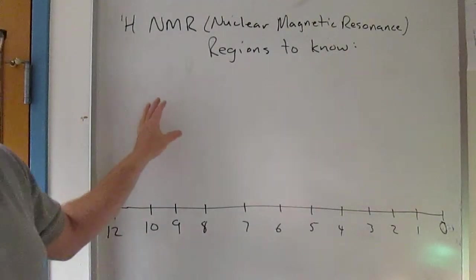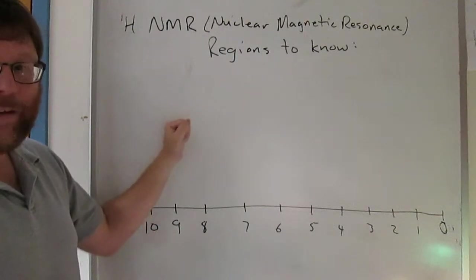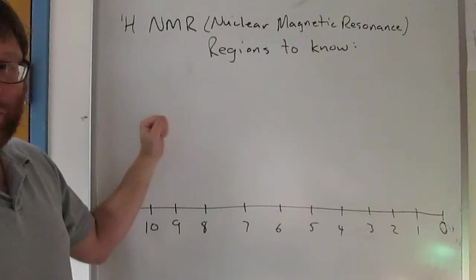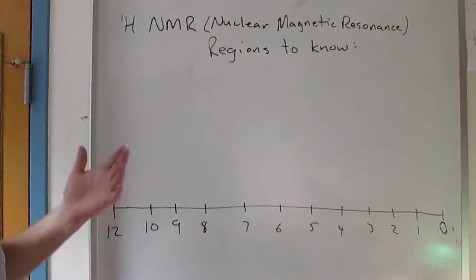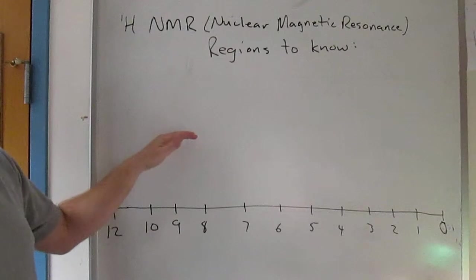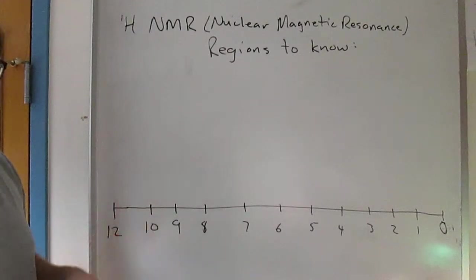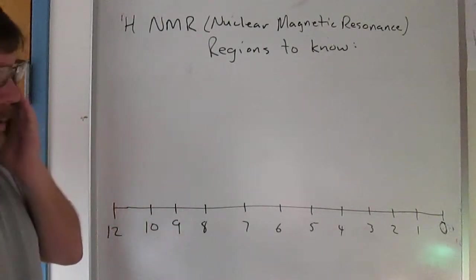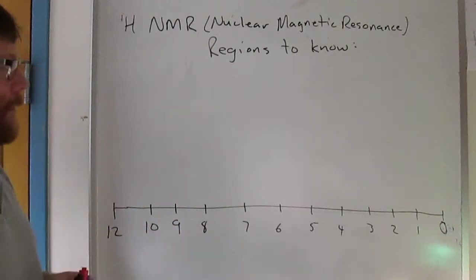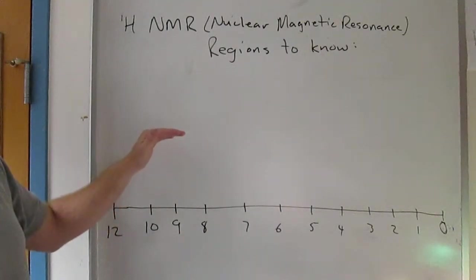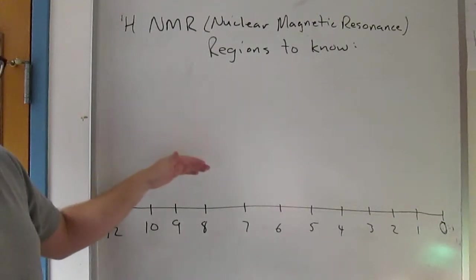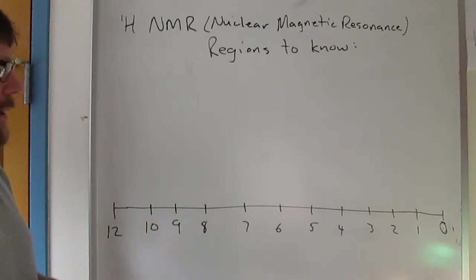Proton NMR is probably the single most useful spectroscopy to the organic chemist that's around today. If you're a working organic chemist, you're going to take a lot of proton NMR, a little less carbon NMR, and you'll take a lot more of these than IR. As I did on the IR spectroscopy, I just want to go over some of the regions that you should know in these spectra.